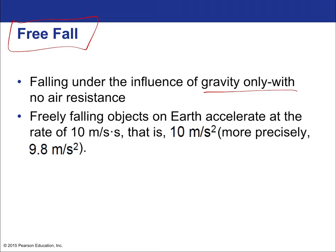A freely falling object on Earth accelerates at 10 meters per second squared when rounding, or more precisely 9.8 meters per second squared. Unless specified otherwise, use 9.8.